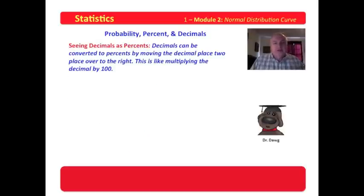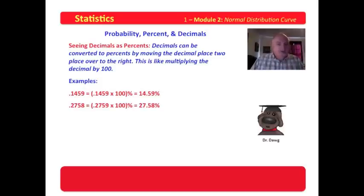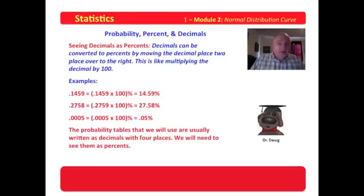Decimals can be converted to percents by moving the decimal places two places over to the right. This is like multiplying the decimal by 100. Some examples. We have a decimal 0.1459. That's equal to, if we move that decimal over two places, which is like multiplying it by 100 and adding a percent sign, it changes to 14.59%. So 0.1459 can be written as 14.59% by simply moving the decimal two places to the right. 0.2758 can be written as 27.58%. 0.0005 can be written as 0.05%.